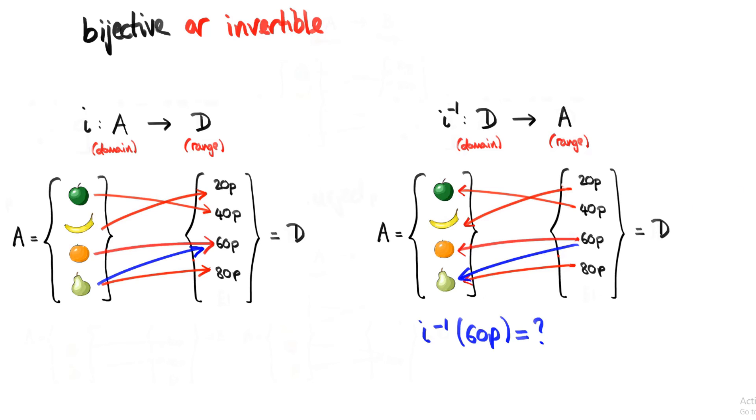And equally, if there were any elements in B that didn't have an arrow pointing out of them, then we also couldn't have this function.